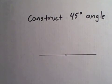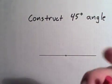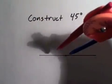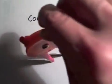Next, you need to construct a line that is perpendicular to the original line through that point. To do so, first draw an arc around that point.